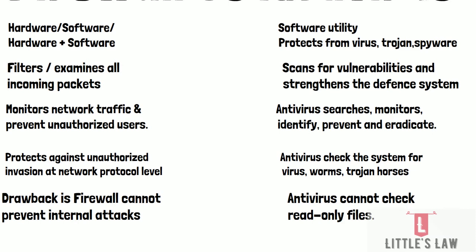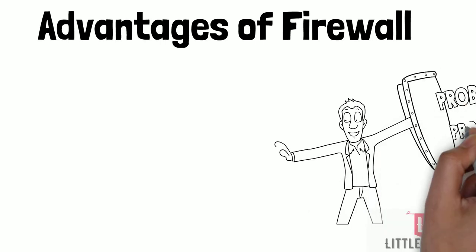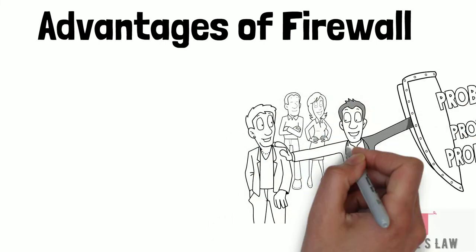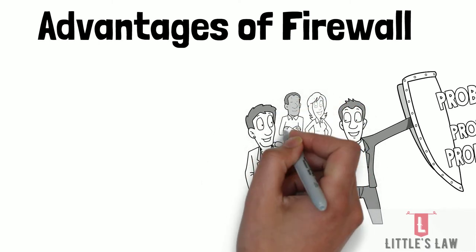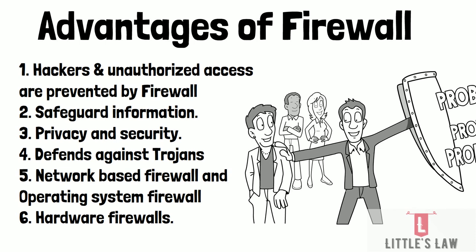Now let's see the advantages of firewall separately. Hackers and remote unauthorized accesses are prevented by a firewall since it deals with the incoming IP packets. It safeguards information, and privacy and security are the major important factors. It defends our system against Trojans. A network-based firewall, generally called a router, can protect many systems, but an OS-based firewall can only protect single computers. Hardware firewalls do not interfere with system functions, resulting in less system interruption and high performance.